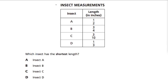In this question, they give us a table and tell us that the table is all about insect measurements. Here are the insects we're talking about: A, B, C, and D, and here are their lengths in inches: a half of an inch, three-fourths of an inch, three-tenths and a third of an inch. Which insect has the shortest length? We're comparing all of these fractions.